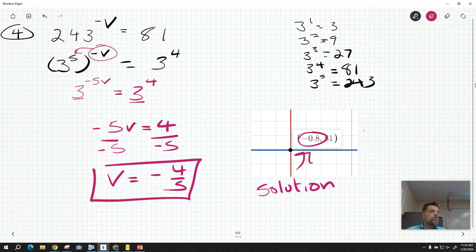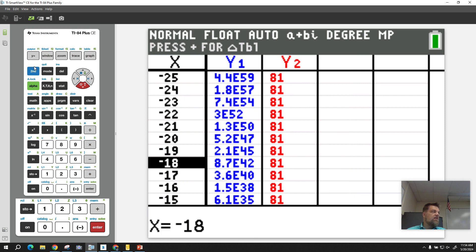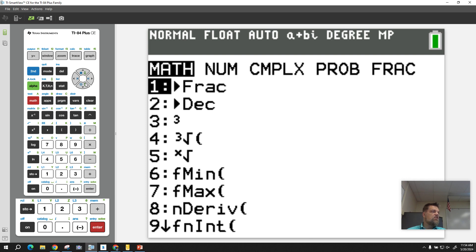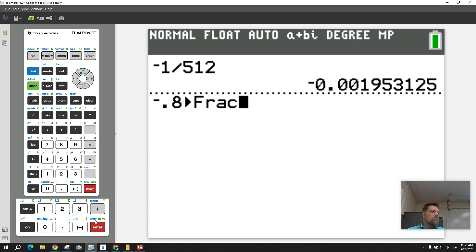How can I make sure that negative 0.8 is the same as negative 4 fifths? Well, there's two ways. I could go into my calculator, my fancy calculator, and I could say negative 0.8, hit the math button, change that to a fraction, yes? Hit enter. Boom. Negative 4 fifths. Or I could say negative 4 divided by 5. Either way.